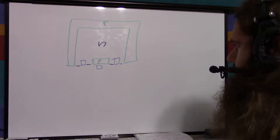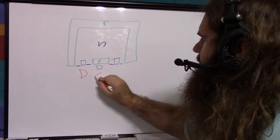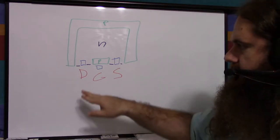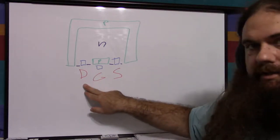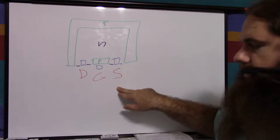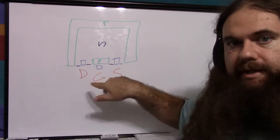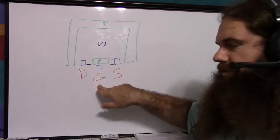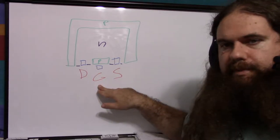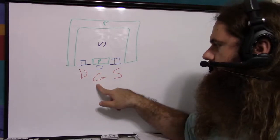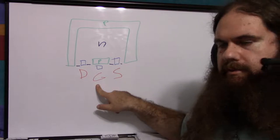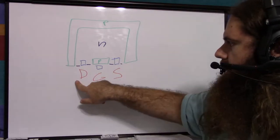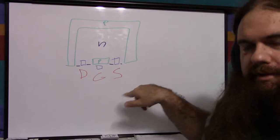These three pins are the drain, the gate, and the source — the same as an NPN transistor where you have the collector, the base, and the emitter. They don't work the same way, but they are conceptually the same. The gate, like the base of an NPN transistor, is the control node — this is how you change how the transistor is working. The current goes from drain to source.